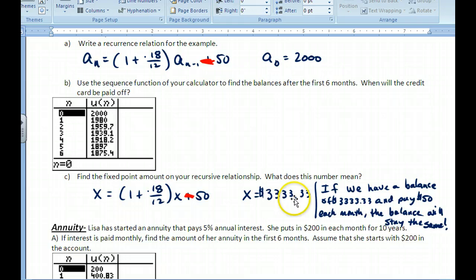What does $3,333.33 mean? It means that if I plug that into my calculator and pay off fifty dollars every month with this initial value, I will have that balance every month. I will never pay this off.